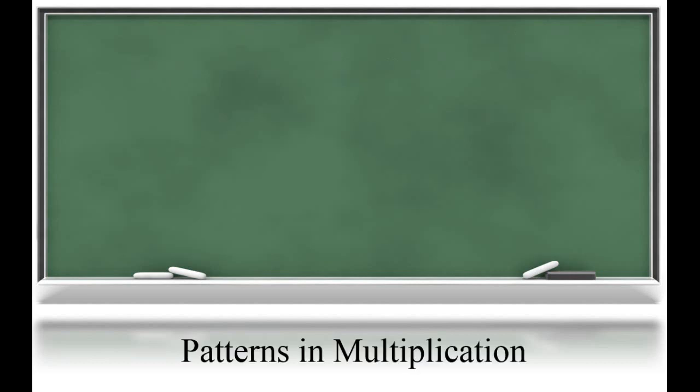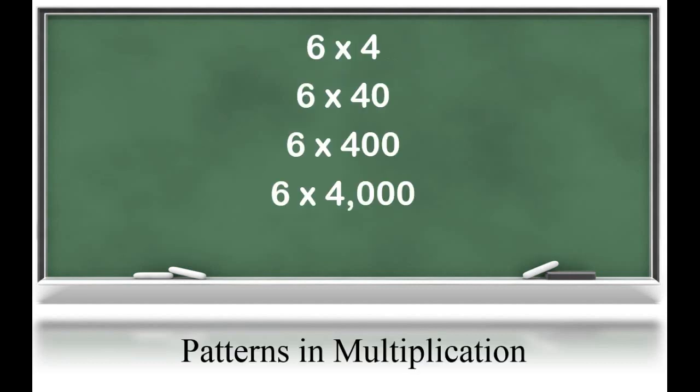Next, students are going to move into patterns of multiplication. These might be some patterns that you've already seen before — you might know that zero trick of just counting the number of zeros and moving that number of zeros into your product. That's a trick we want students to eventually develop, but we want them to understand why that works and to know those patterns of multiplication. Let's look at some models to help students understand.